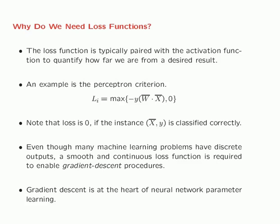Why do we need loss functions? In most single-layered neural networks, the loss function is paired with an activation function in order to quantify how far we are from a desired result. Revisiting the perceptron criterion, if an instance x, y is classified correctly, the loss of that instance is 0 because the dot product of w and x has the same sign as y, and max of minus y times wx and 0 will be 0. These continuous and smooth loss functions enable gradient descent approaches in neural networks.